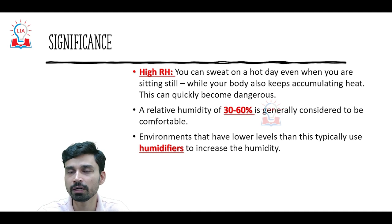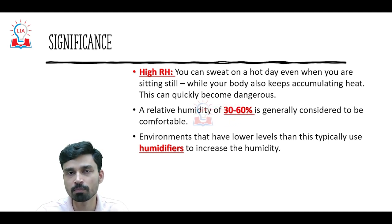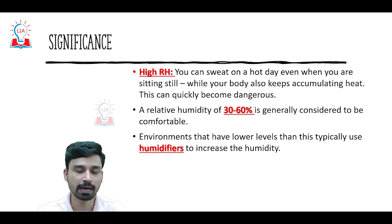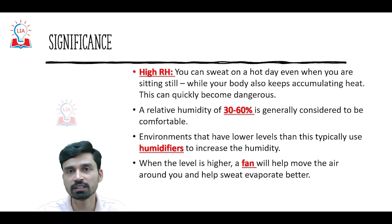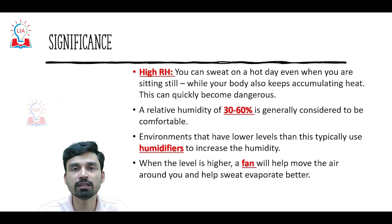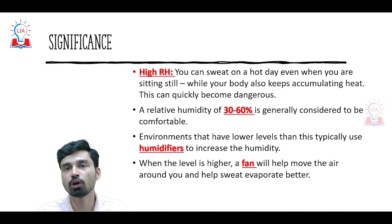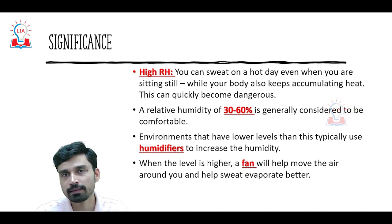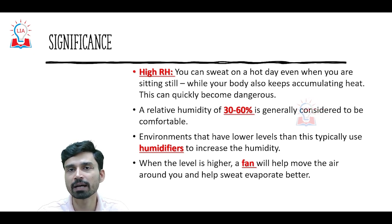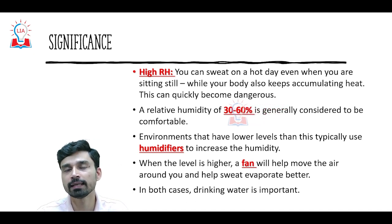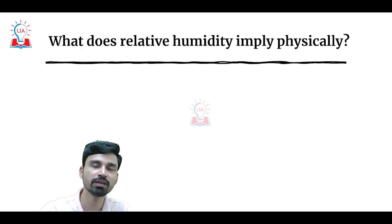We have two different types of situations to manage extreme relative humidity. First, if the environment has a very low level of humidity — a very dry environment — that is also not good for the body, as many people experience problems like bleeding from the ear and nose, because in such high temperature and dry air, blood pressure becomes higher than the surrounding atmosphere. That is when we use humidifiers to keep humidity within 30 to 60%. Second, when humidity is very high, a fan will help move the air around you and help sweat evaporate better. In both extremes, drinking water is very critical for survival.